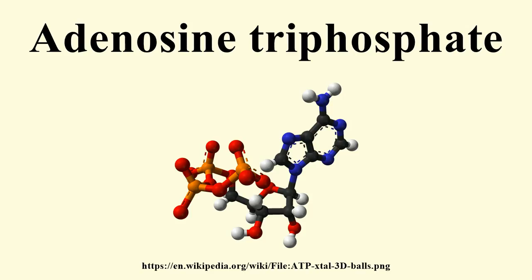A transaminase converts the oxaloacetate to aspartate for transport back across the membrane and into the intermembrane space. In oxidative phosphorylation, the passage of electrons from NADH and FADH₂ through the electron transport chain powers the pumping of protons out of the mitochondrial matrix and into the intermembrane space. This creates a proton motive force that is the net effect of a pH gradient and an electric potential gradient across the inner mitochondrial membrane. Flow of protons down this potential gradient, from the intermembrane space to the matrix, provides the driving force for ATP synthesis by ATP synthase.